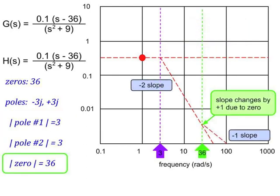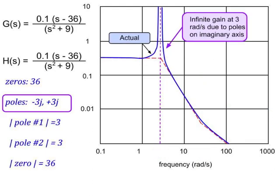Moving up in frequency, we next encounter the zero at 36, and we'll need to adjust the slope for this as well. For zeros, we increase the slope by 1 for each zero. There's a single zero at 36, so the slope changes from minus 2 to minus 1. I want you to note that a zero in the right half plane is not really treated any differently than a zero in the left half plane. We've now completed drawing the asymptotic curve. The important thing to note is that we have two poles on the imaginary axis, so we'll have infinite gain at 3 radians per second. Here I've sketched in blue the actual frequency response plot, showing the infinite gain at 3 radians per second.